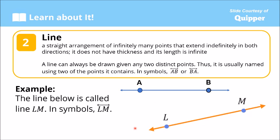Example: the line below is called Line LM. We have Point L and Point M. In symbols, we write Line LM using capital letters L and M with a line drawn above them showing two arrowheads. This line can also be named Line ML.